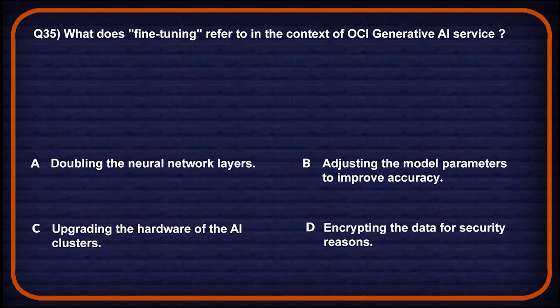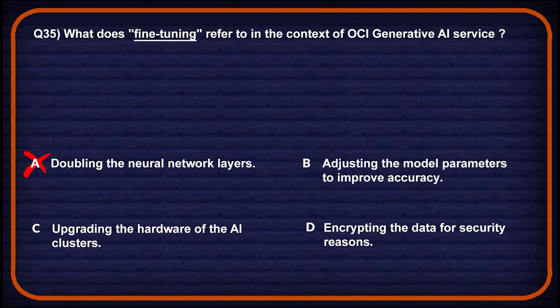Let's move on to question number 35: what does fine-tuning refer to in the context of OCI Generative AI service? Option A: doubling the neural network layers — fine-tuning adjusts model parameters, not network depth, so wrong choice. Option B: adjusting the model parameters to improve accuracy — fine-tuning updates weights using new data to improve task performance, so this might be a potential answer.